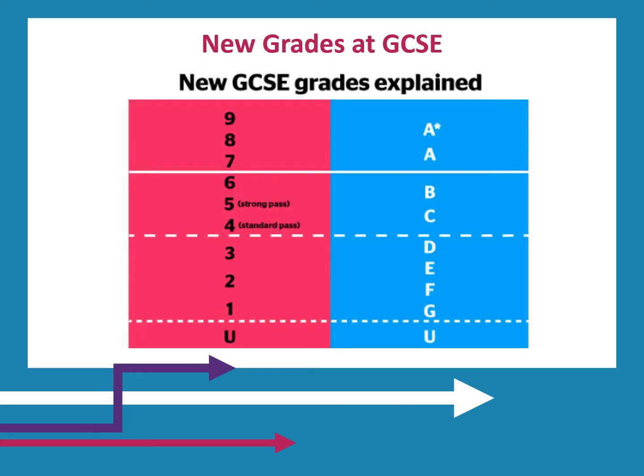This slide provides a comparison between the new numerical grading format at GCSE and the legacy A* to G grading system. A Grade 4 is considered a standard pass, whereas a Grade 5 is a good or strong pass. Numerical grades 4 to 6 are approximately equivalent to legacy grades C to B; grades 7 to 9 are approximately equivalent to A to A*; and grades 1 to 3 are approximately equivalent to D to G.